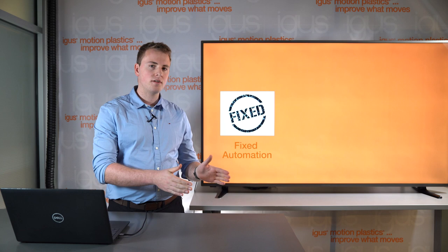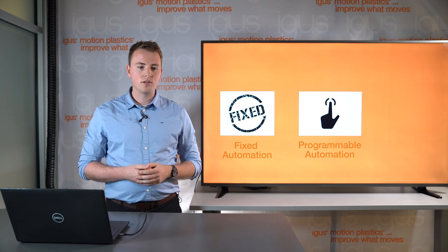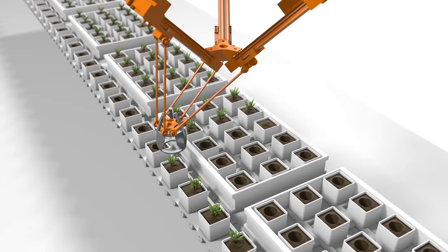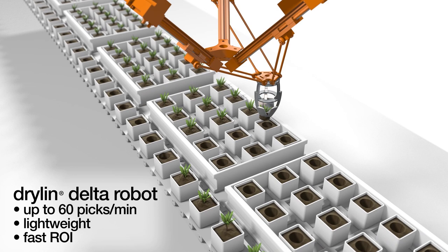The second is programmable automation, which is the use of automation that can be slightly changed through programming. This could be a production line that has different parts running on it, and your equipment has to adapt to the different parts coming down the line. The user changes the input to allow slight flexibility in your automation process.